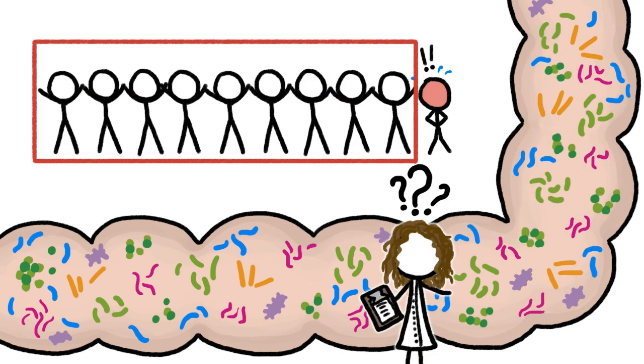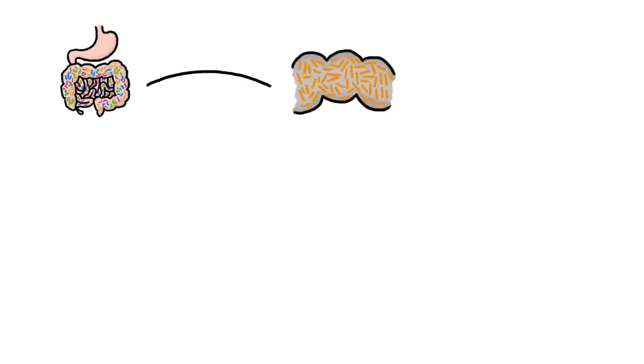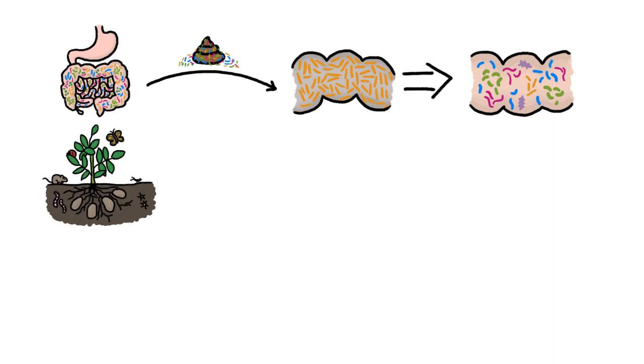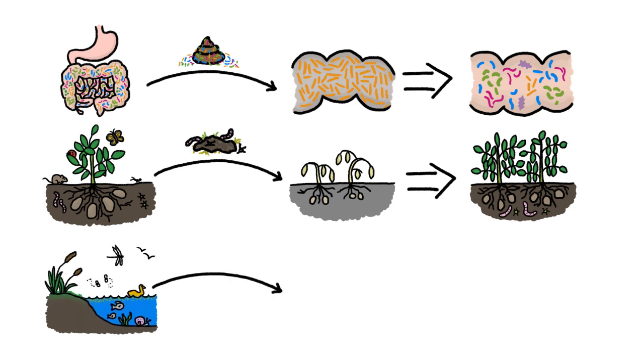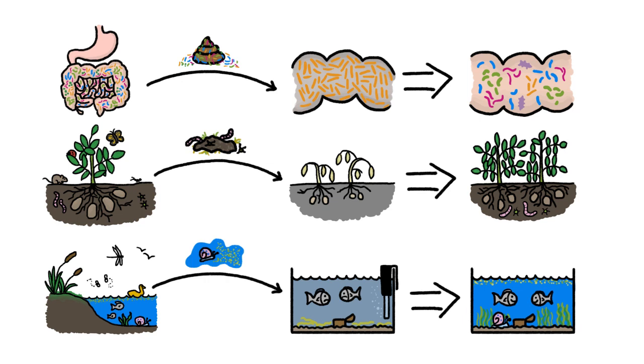The human gut isn't the only ecosystem where this germ of an idea is taking hold, either. For example, transplanting soil from healthy fields to unhealthy ones helps knock back crop diseases and make soils more fertile. And transplanting water, snails, and duckweed from a pond to an aquarium helps maintain a well-balanced fish tank.